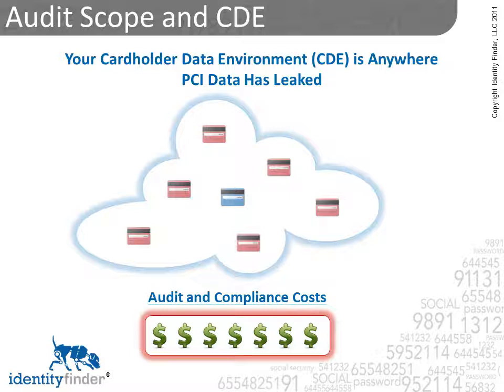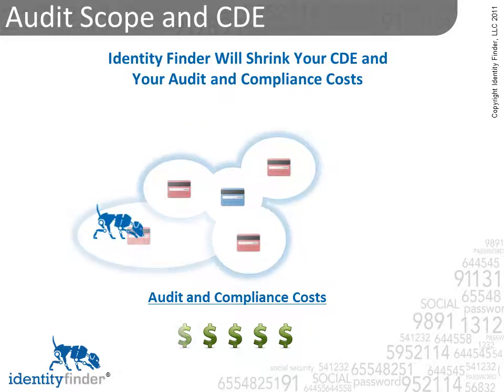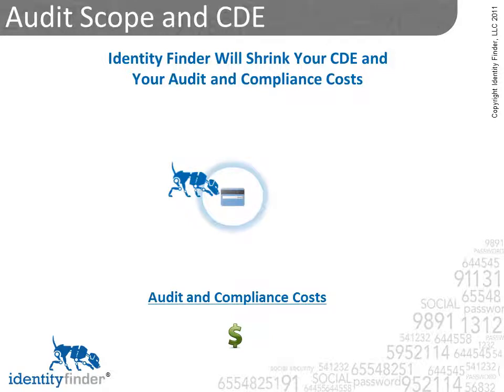That's what Identity Finder does best. Identity Finder will search for all of the unauthorized copies of PCI data across your entire network and give you the tools to delete the data. This can save you tens of thousands of dollars in audit and compliance costs.